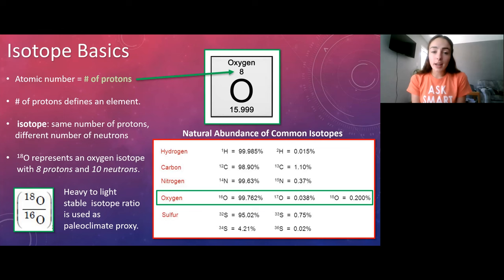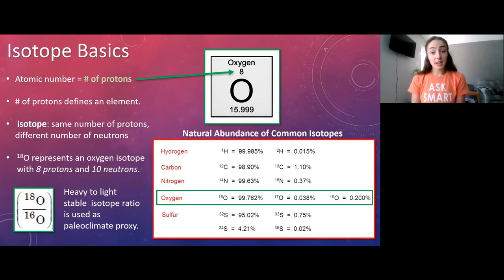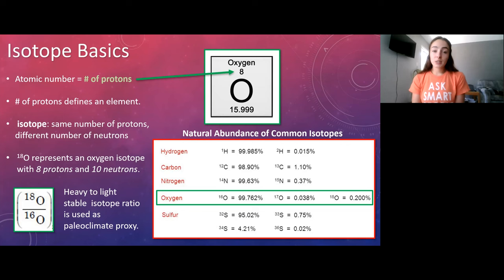We call them heavy and light isotopes because neutrons add significant weight to a nucleus. For light isotopes this is especially significant — if you take hydrogen, which has one proton and no neutrons, and add a neutron to make deuterium, it doubles its mass, and the physical way it moves through different systems in the environment changes a lot.